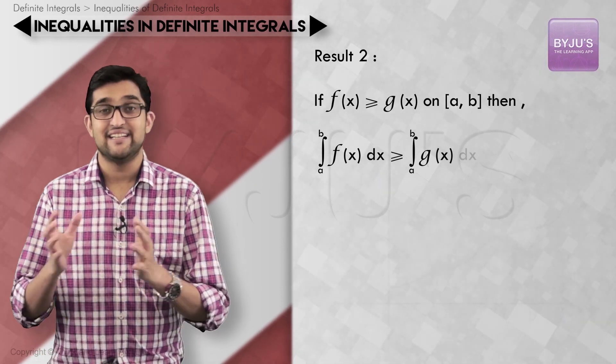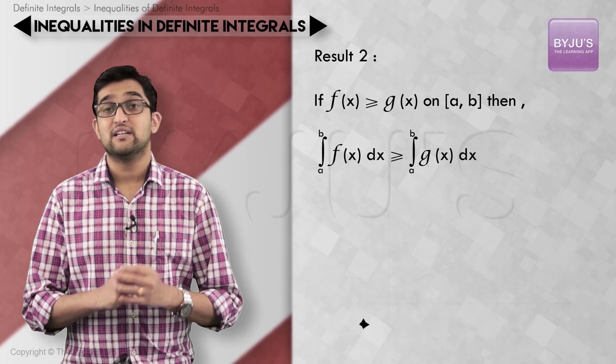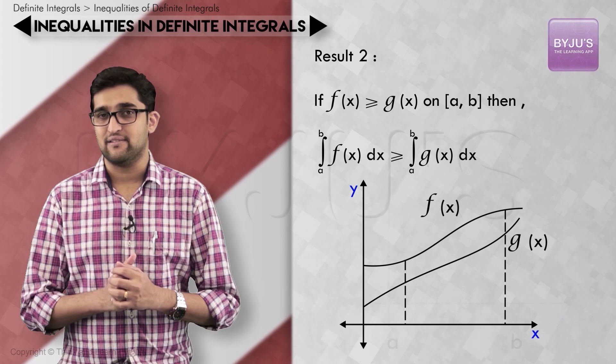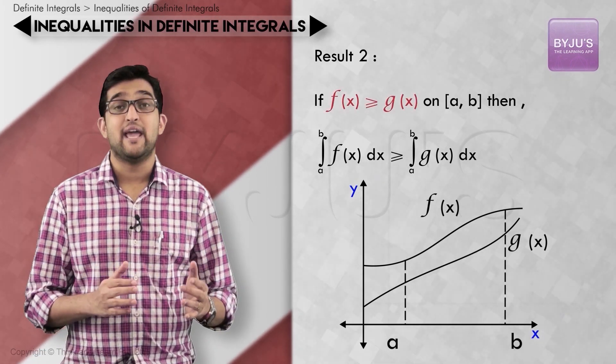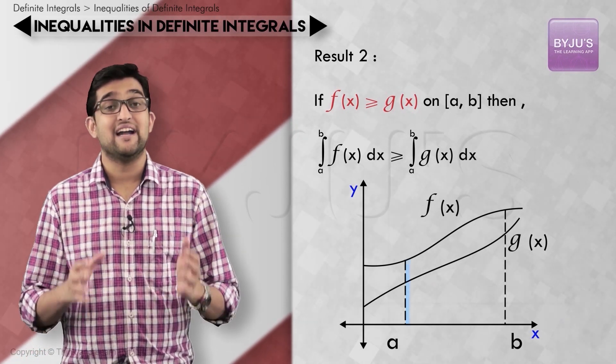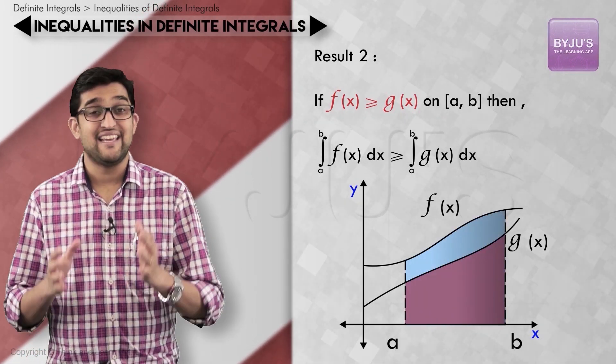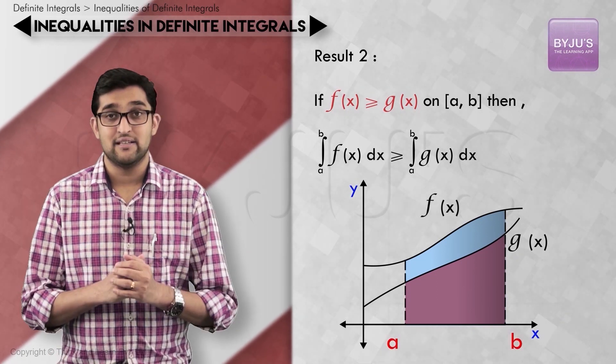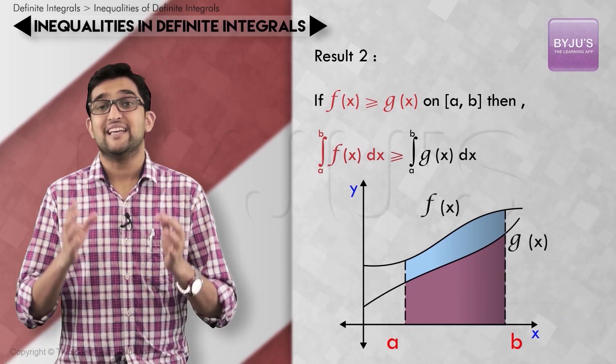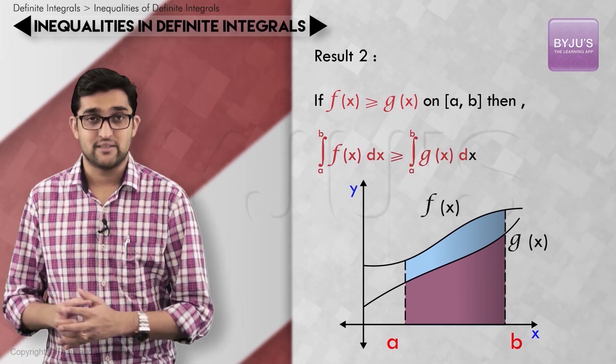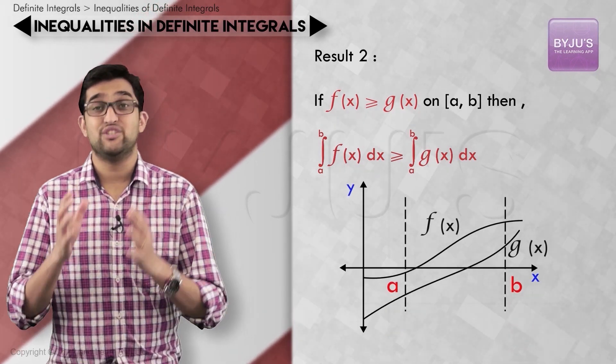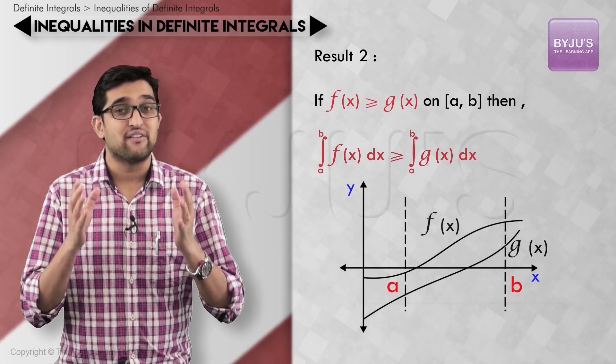Let's see an example. Consider the graphs of functions f and g as you can see on the screen. You can see that f(x) is greater than or equal to g(x), and the area under f(x) is greater than g(x) in the closed interval [a, b]. That's nothing but integral a to b f(x) dx greater than or equal to integral a to b g(x) dx. You can check for yourself if this holds true when f(x) or g(x) crosses the x-axis in the interval [a, b].